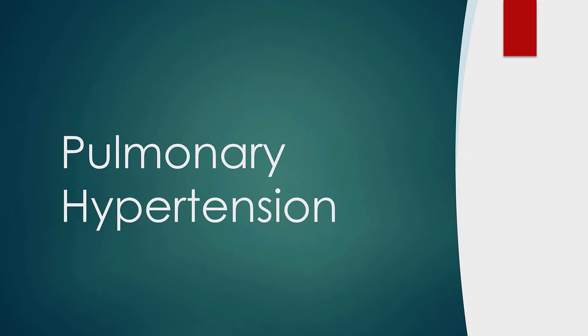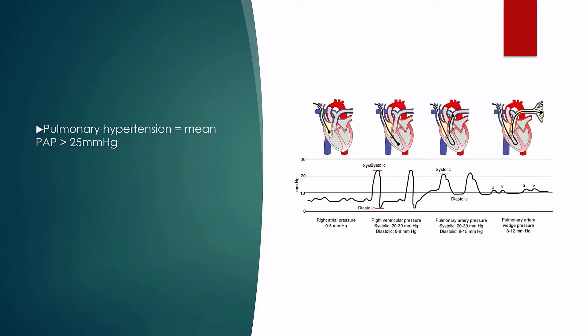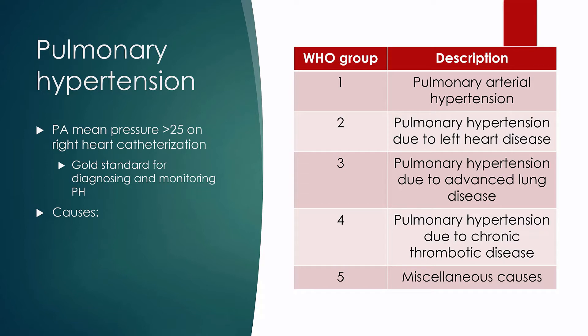We're going to talk about pulmonary hypertension today, and the information shared in this presentation is consistent with the guidelines and recommendations of the American and British societies of echocardiography. Pulmonary hypertension is a diagnosis that can only be made on right heart catheterization where pressures in the pulmonary artery can be directly measured, defined as a mean pulmonary artery pressure greater than 25 millimeters of mercury. This remains the gold standard. The many causes, particularly chronic pulmonary hypertension, are beyond the scope of this talk, although the WHO groupings are listed here for your reference. We will mention some causes unique to or common in ICU patients.